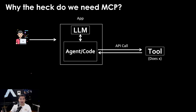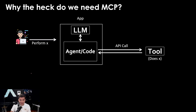Let's work backwards from the main question: why do we need MCP? This part is important for interviews. As a user, you may ask a large language model questions like what's the weather in New York City or what are hotel prices. This information large language models will not have, so they rely on an agent or a piece of code to call a tool that performs those actions.